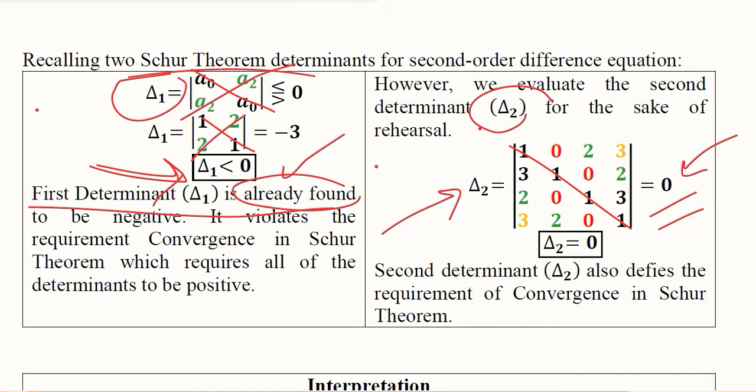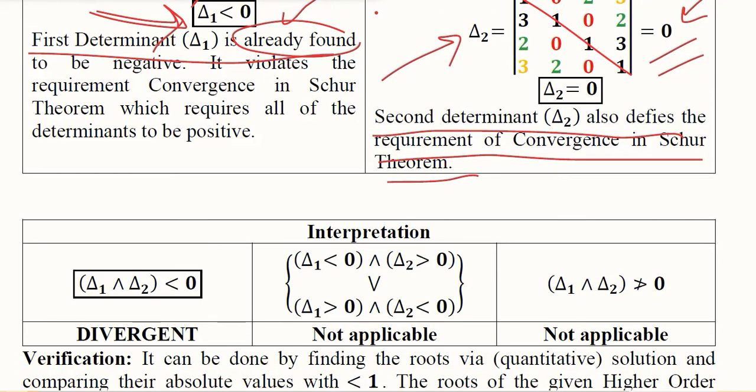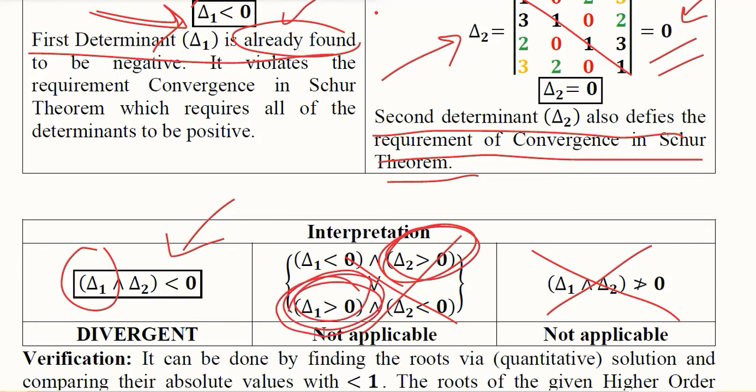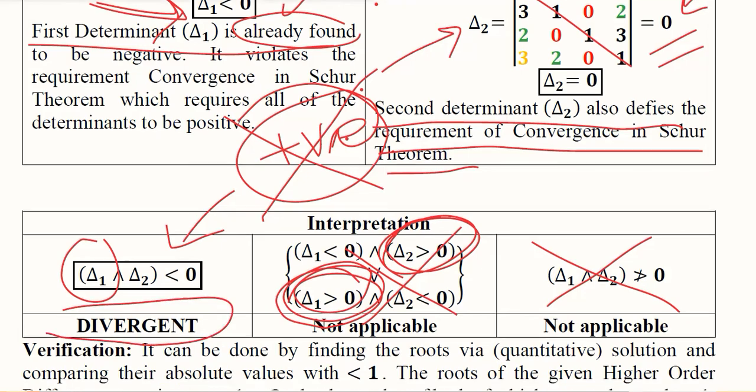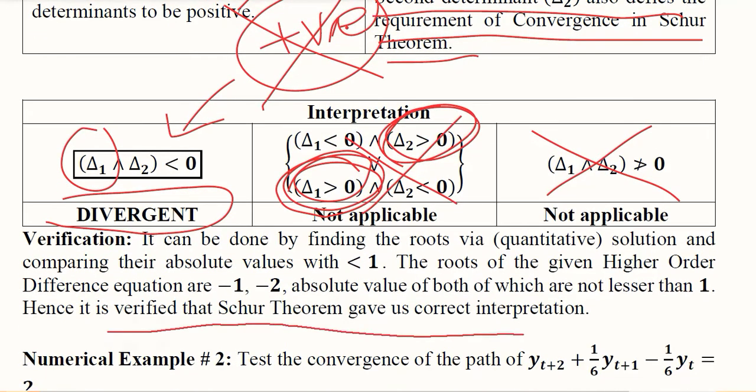It doesn't make much difference because one of the determinants is already less than 0. We have a second determinant defying the requirement of convergence as per Schur's theorem. This case is not holding because both are not positive. One is equal to 0 and the other is clearly negative. Neither is positive, therefore the divergent situation is emerging in this case.